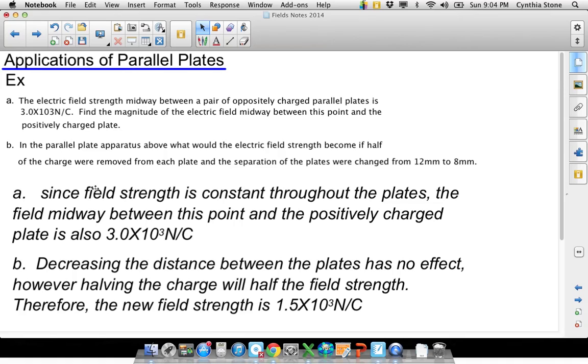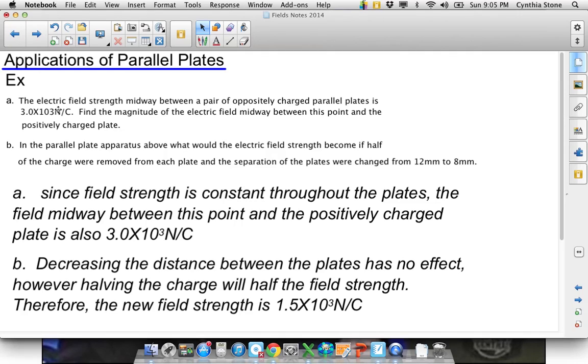So just a quick example with parallel plates. Say we have the electric field midway between a pair of oppositely charged parallel plates is, that should read 3 times 10 to the exponent 3, so 3,000 newtons per coulomb. And it says, find the magnitude of the field midway between this point and the positively charged plate. And the answer to A is just keeping in mind that the field strength we assume is constant, so it's 3,000 still. And then it says in part B, in the parallel plate apparatus above, what would the electric field strength become if I removed half of the charge and I decreased the distance between them? Well, changing the distance between the plates means nothing, but halving the charge will halve the field strength. So the field strength is directly proportional to the charge. So if you decrease the charge on the plates, then you decrease the field strength.